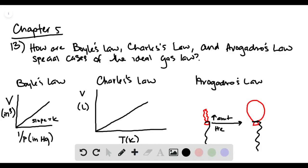Problem 13 says explain how Boyle's law, Charles' law, and Avogadro's law are special cases of the ideal gas law.